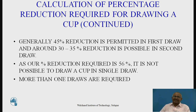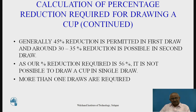Generally, 45% reduction is permitted in the first draw — not more than 40 to 45%. In the second draw, around 30 to 35% reduction is permitted. Our percentage reduction required is 56%, which clearly implies that drawing this cup in a single draw is not at all possible. Therefore, it is confirmed that more than one number of draws are required to draw the cup in the given problem.